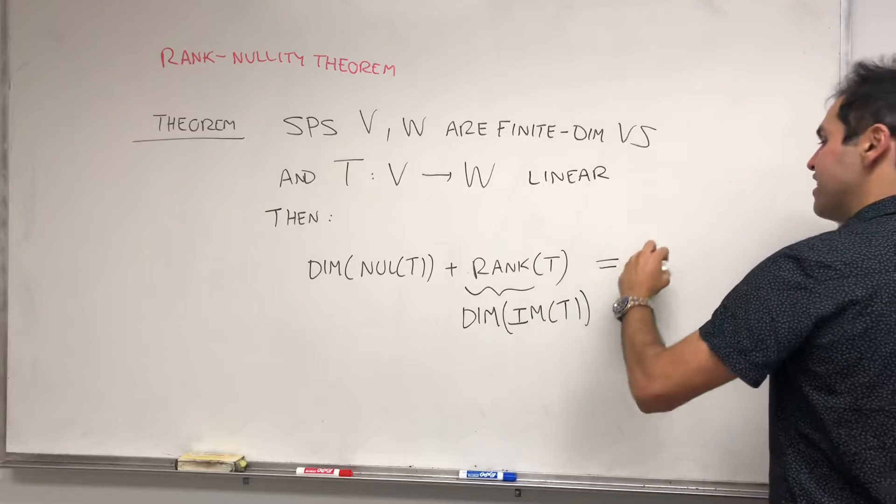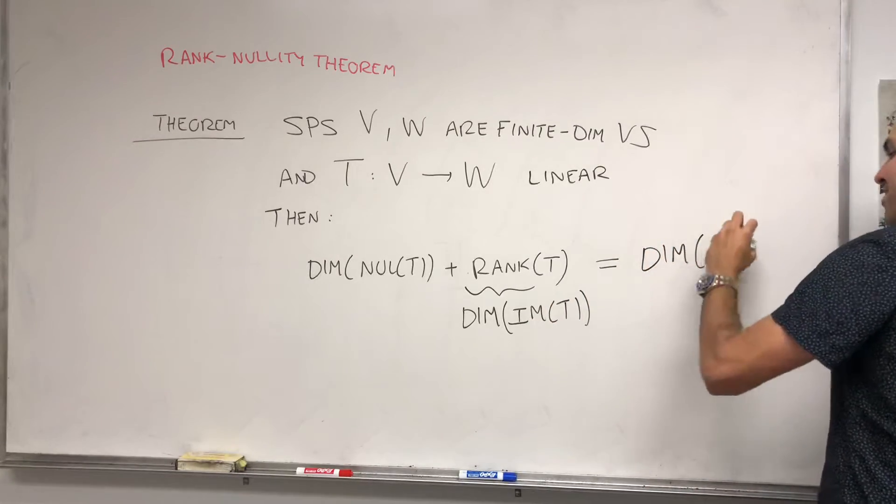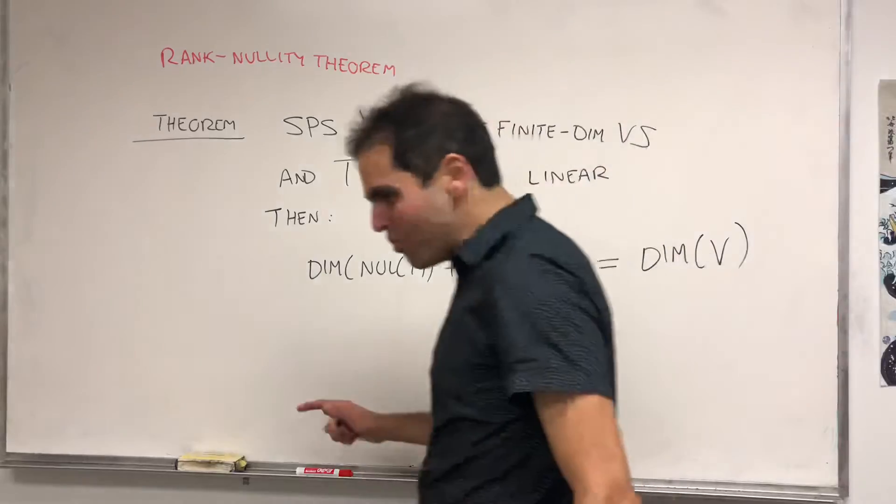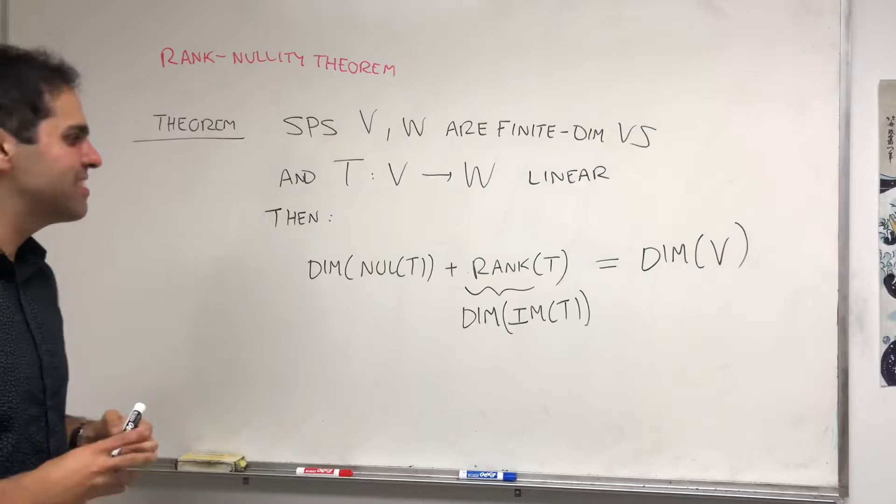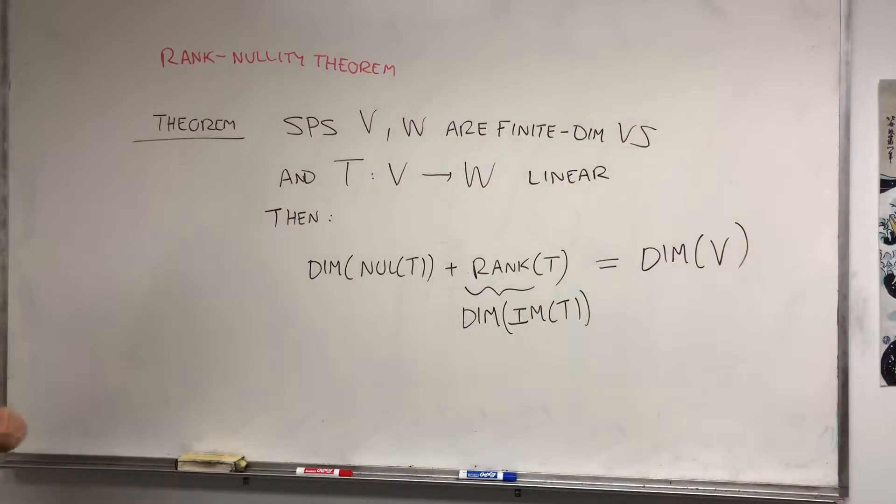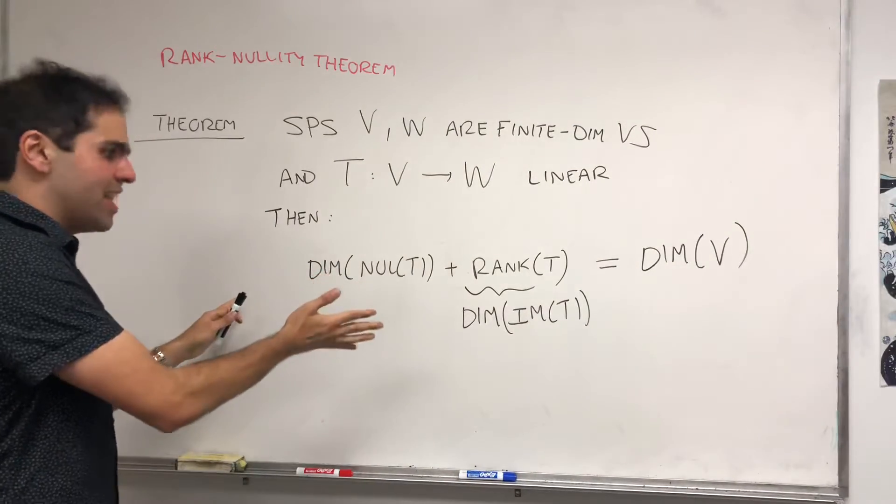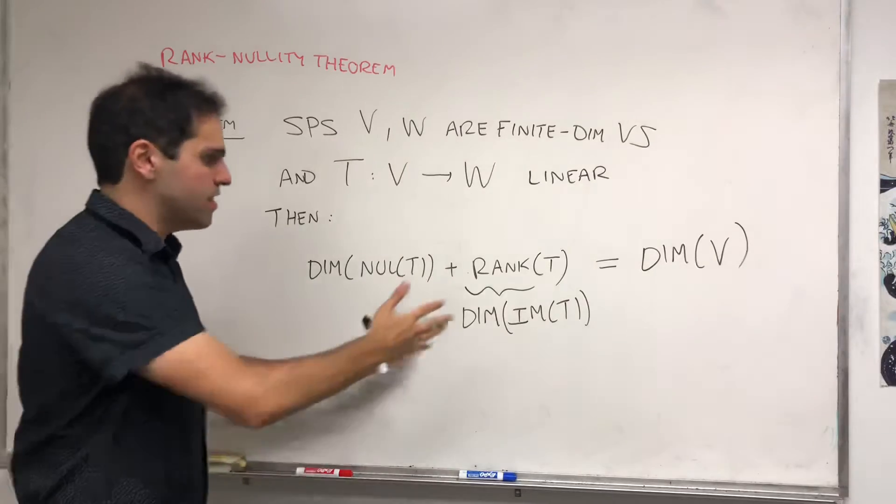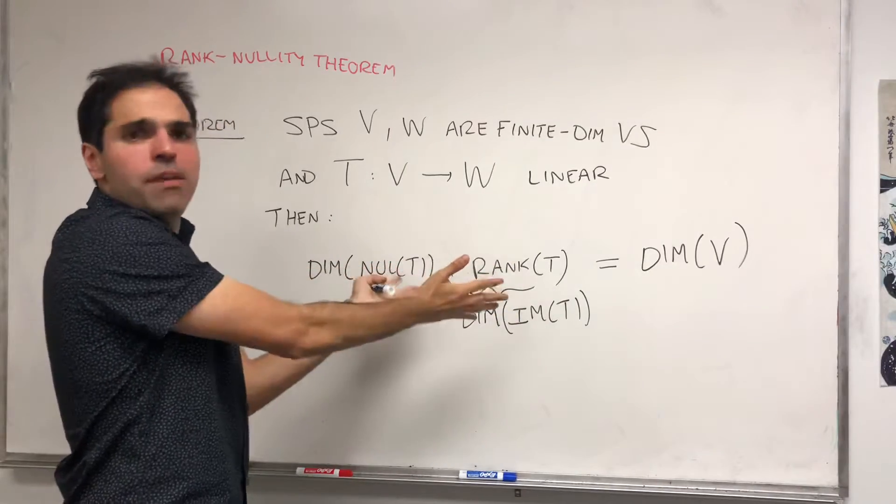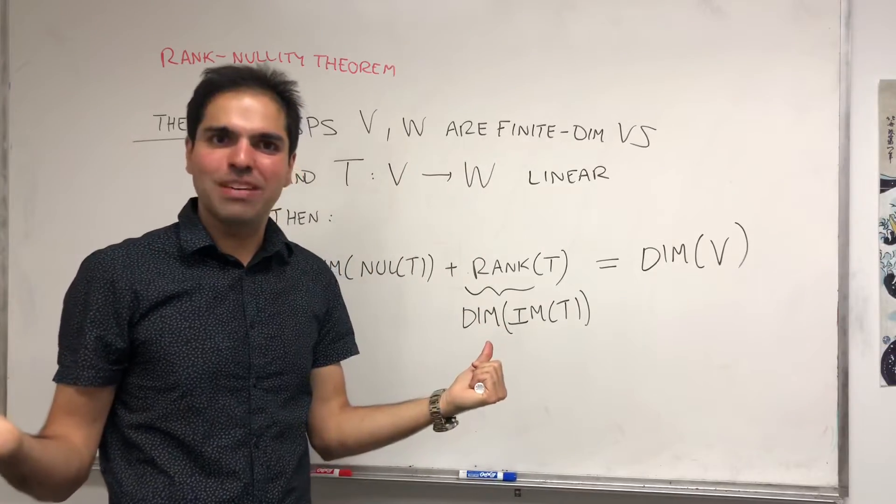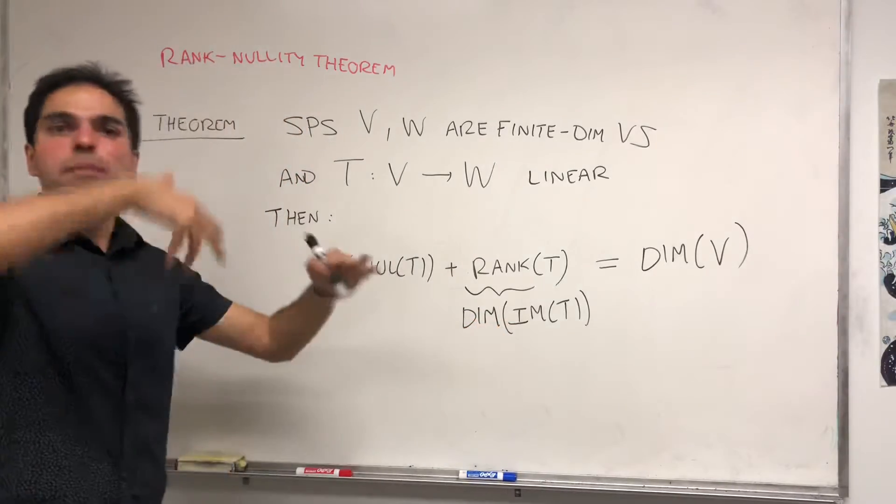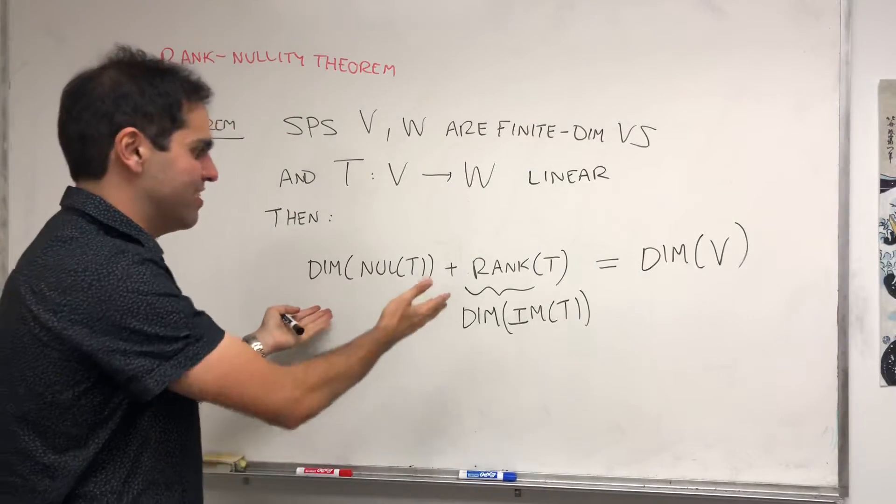And this proof will show why we need the dimension of the input space, not the output space. And what is this saying? Remember the null space measures how bad a linear transformation is. The rank measures how good a linear transformation is.